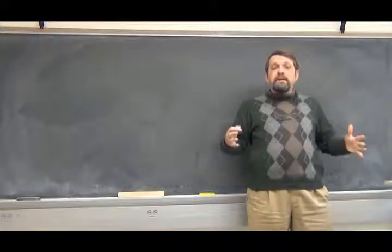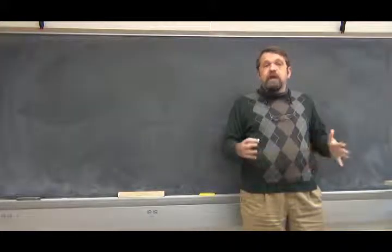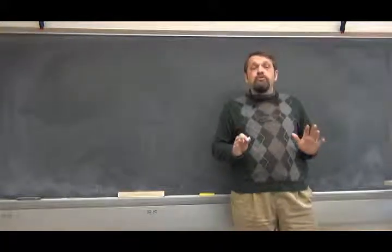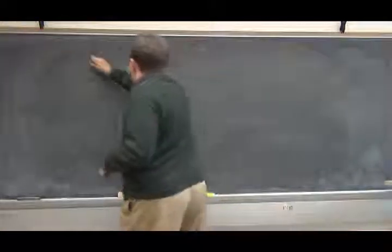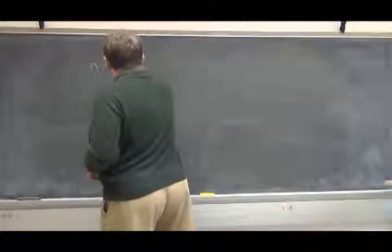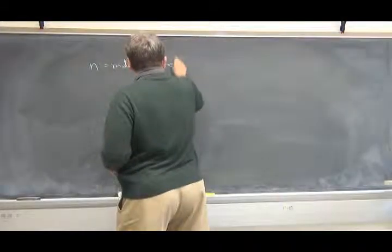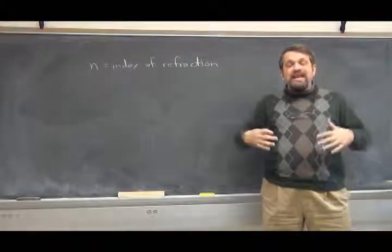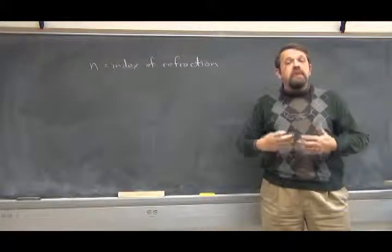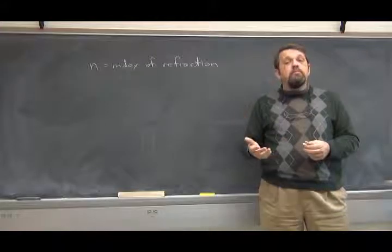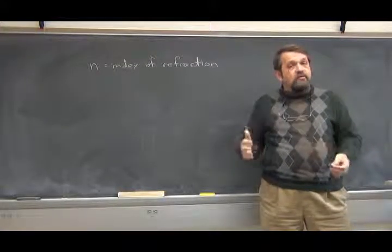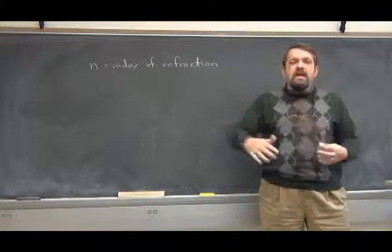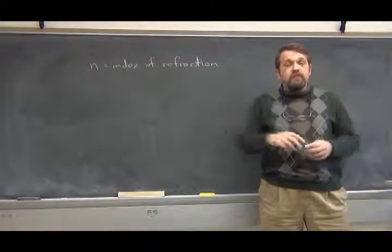Now we're going to talk about how light propagates through a transparent medium — not empty space, but perhaps air, or water, or glass. To study how that occurs, we need to introduce the concept of the index of refraction, called N. The point is this: the speed of light in a medium is not the same as the speed of light in empty space. Light moves more slowly in a medium like glass than it does through empty space, because the electromagnetic field is interacting with the atoms of the glass, and that causes the waves to propagate more slowly.